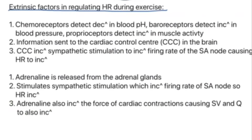Now the extrinsic factors regulating heart rate during exercise. The chemoreceptors detect that decrease in blood pH. Baroreceptors detect the increase in blood pressure, and proprioceptors detect the increase in muscle activity. That information is sent to the cardiac control centre in the brain — remember, in the vascular shunt mechanism it was the vasomotor control centre; this is the cardiac control centre. The cardiac control centre then increases sympathetic stimulation to increase the firing rate of the SA node, causing heart rate to increase. Adrenaline is similar — released from the adrenal glands, it stimulates sympathetic stimulation increasing the SA node firing rate, also increasing heart rate. Additionally, adrenaline increases the force of cardiac contractions, causing stroke volume and cardiac output to increase, delivering more oxygen and nutrients to the muscles per minute.